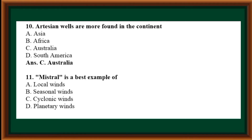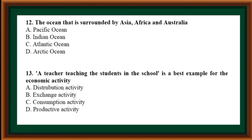Mistral is a best example of: options are local winds, seasonal winds, cyclonic winds, planetary winds. Correct answer: local winds.